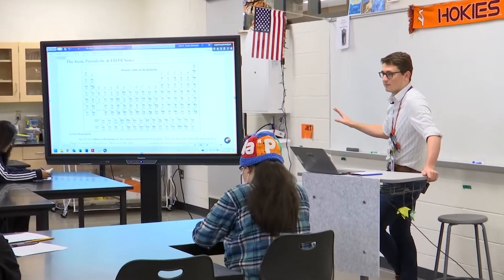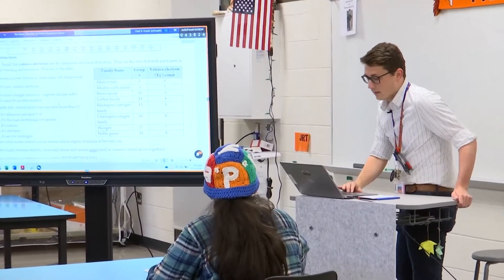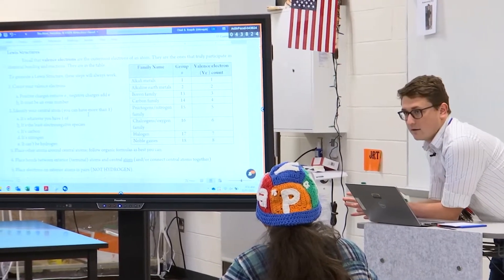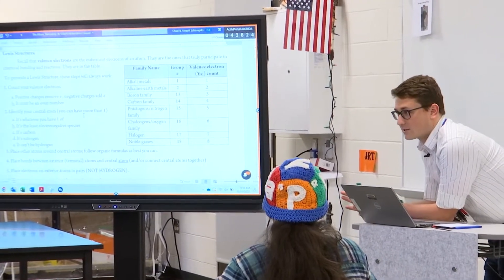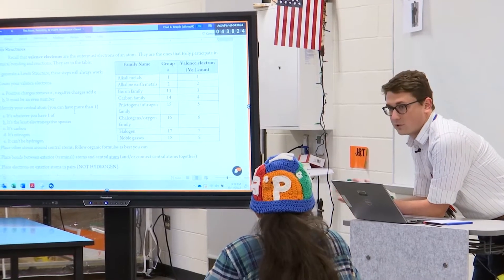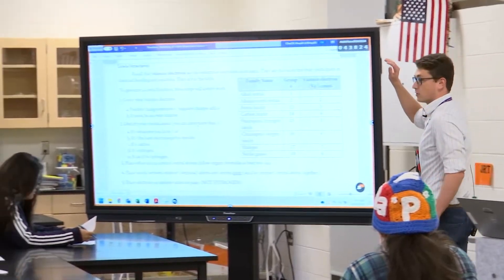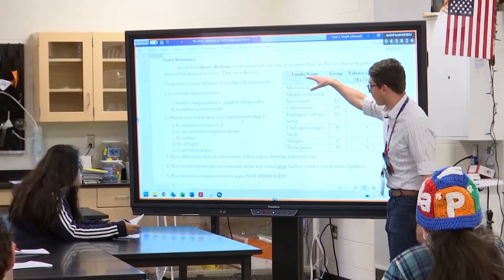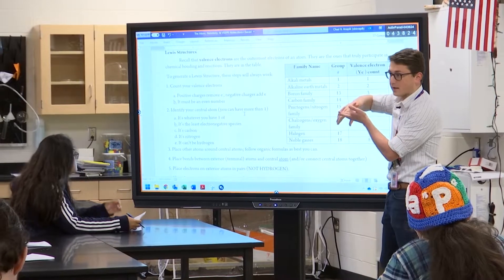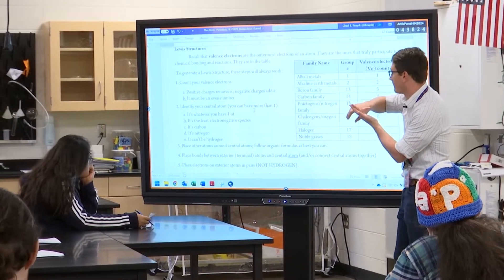Are we ready to break that? We'll go slowly through it. Do we want to briefly go over the rules again? Let's briefly go over the rules. Remember, this is almost impossible to explain in writing—we just have to practice it. These steps should always work for you for structures with exceptions, for structures with expanded octets, and for things that just follow the octet rule.